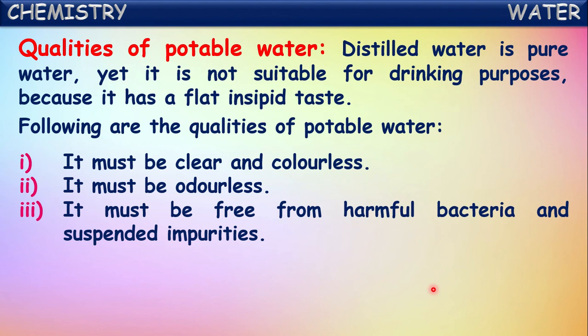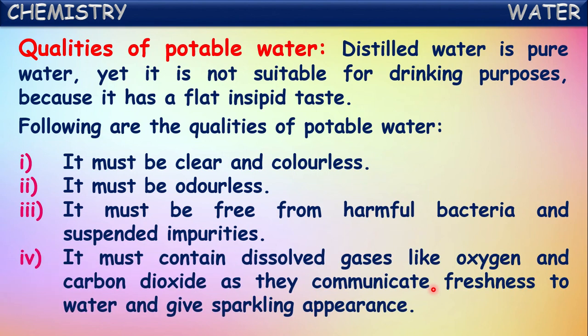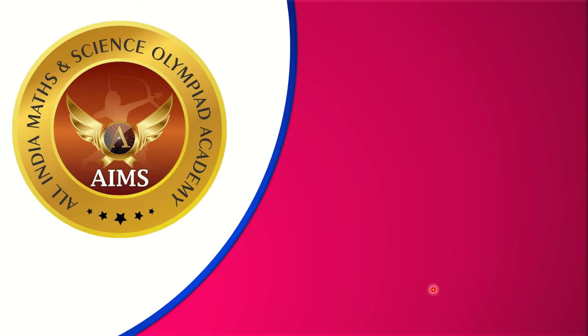Potable water must contain dissolved gases like oxygen and carbon dioxide, as they give freshness and a sparkling appearance to the water. It should also contain small quantities of salts - for every one litre of water, there should be around 2 grams of common salt dissolved in it. Then only it is said to be potable water.